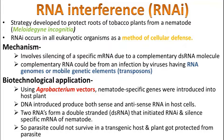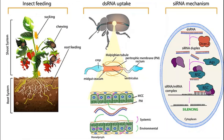The parasite cannot survive in the transgenic host, and the plant is protected from the parasite. The mRNA is silenced using the cell's machinery. RNAi is active in both the shoot system and root system of the plant. When an organism eats this plant, the content will go to the midgut and absorb into the cells.